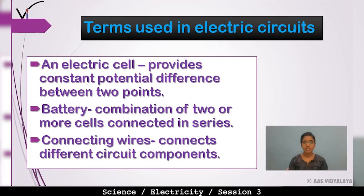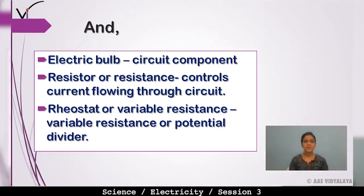Next are connecting wires — they connect different circuit components. Then comes the electric bulb, which also acts as a circuit component. When current flows, the electric bulb glows, which shows that electricity is flowing through the circuit. Resistor or resistance controls the current flowing through the circuit.